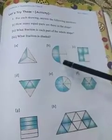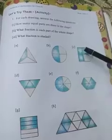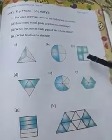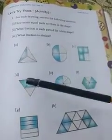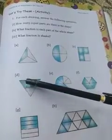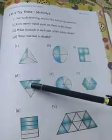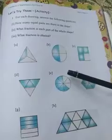Shape b: one, two, three, four - it has four parts, yes. Shape c: one, two, three, four - four parts, yes. Shape d: counting one, two, three, four - yes, four parts. Shape e: counting one, two, three, four, five, six, seven, eight - yes, eight parts.